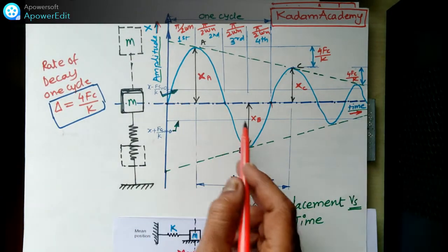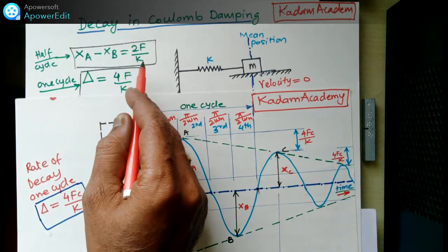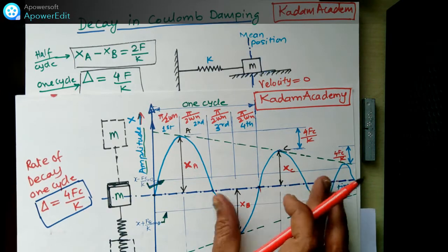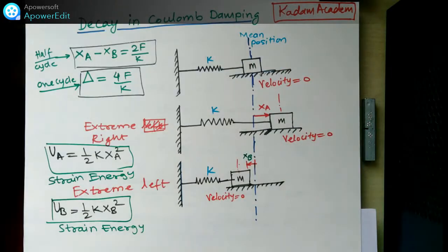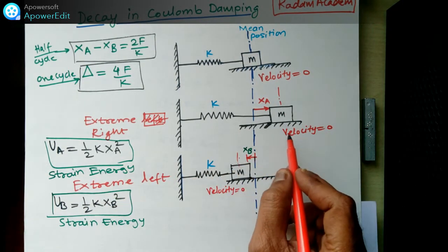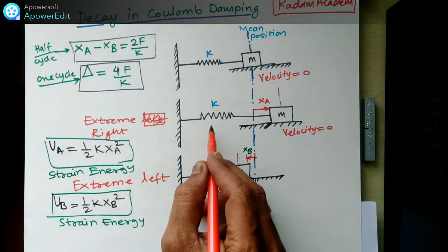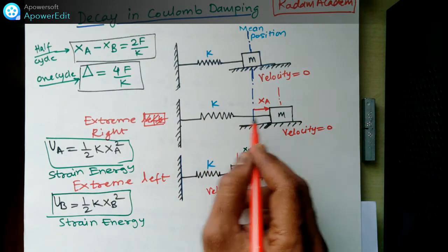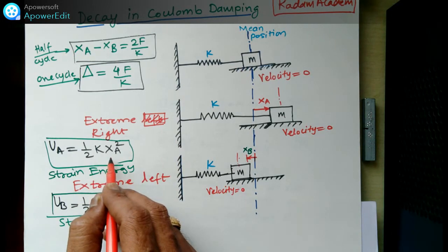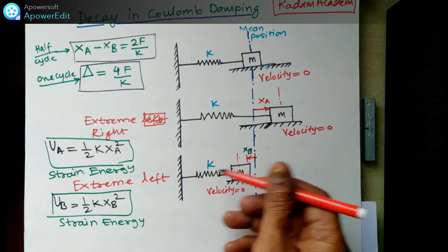As shown, Xa and Xb are the amplitudes at successive half-cycles; their difference is 2Fc/k. For the full cycle it becomes 4Fc/k. When the mass moves to the extreme right position, velocity is zero and the spring is stretched. The strain energy at this position is Ua = ½kXa².